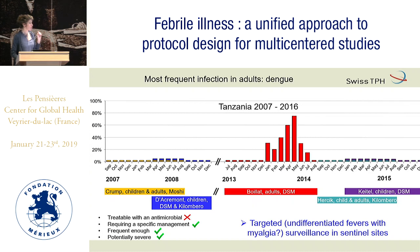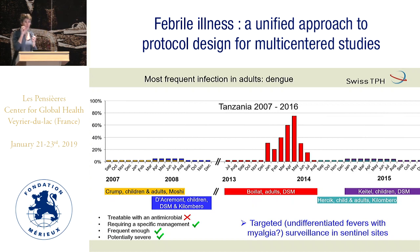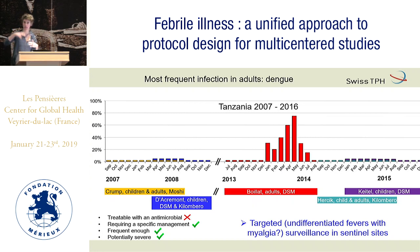We should do targeted surveillance in sentinel sites. If you do surveillance taking consecutive patients, you find zero dengue, zero dengue, zero dengue, and everybody gets tired. So you go for a syndrome — like they do in Senegal, with syndromic surveillance taking patients who have fever, clear myalgia, maybe a rash. Then you look for dengue in sentinel sites. When you detect a few cases, you know something is going on, and you can decide to temporarily put the test in health facilities for patient management.